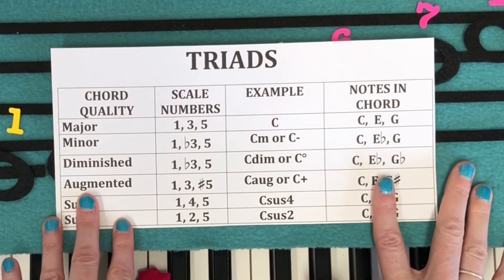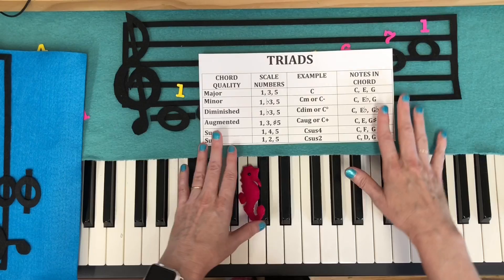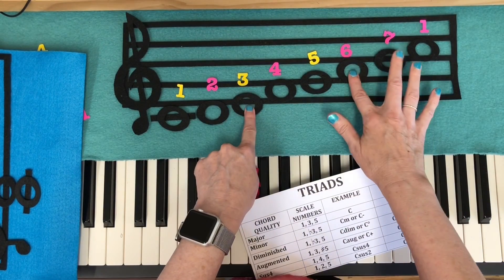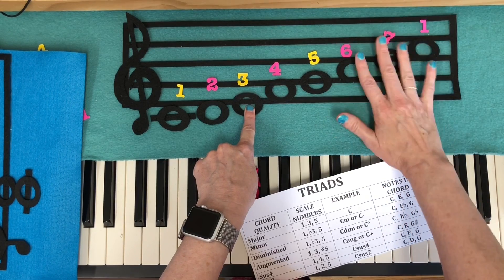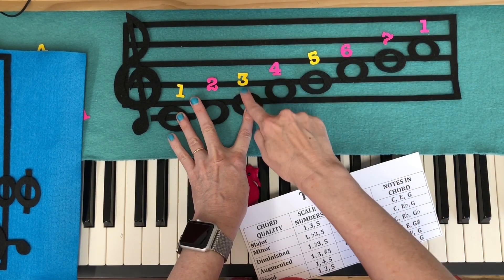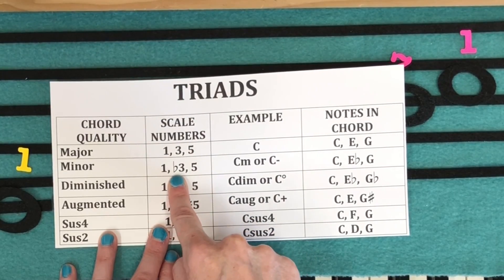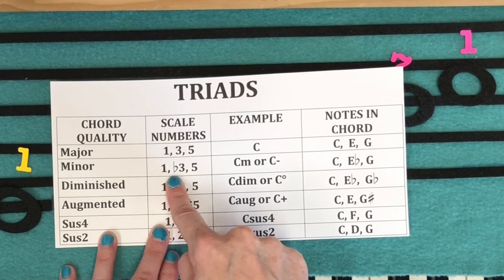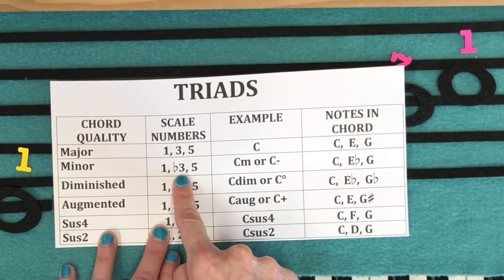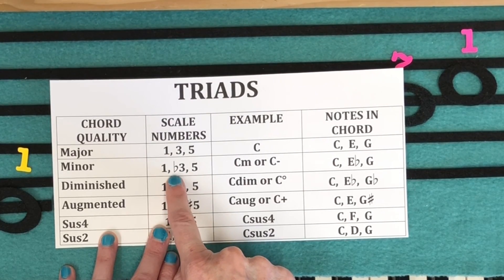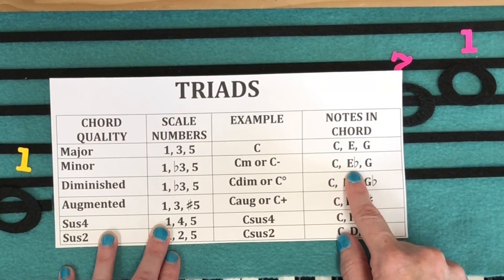When we talked about the relative minor scale or making our major scale minor, we lowered the third, six, and seven. So it makes perfect sense that when we have the chord, we don't have to worry about the six and seven because those aren't actually in our triad. Only the third is going to be affected. This flat is like a verb because it happens before the number, which means it's going to lower the third by a half step.